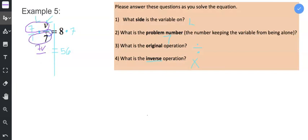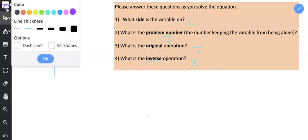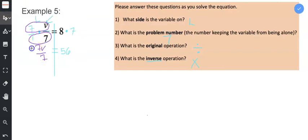We multiply the denominators together and get 7 and then 7 divided by 7 is equal to 1 so that becomes 1V equals 56 and 1V is the same thing as V so V is equal to 56.